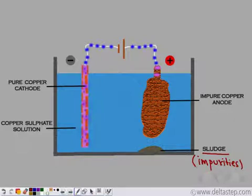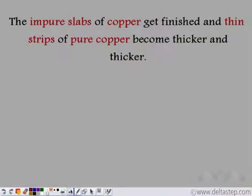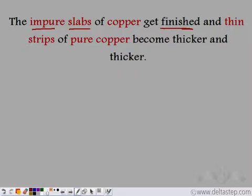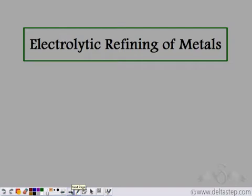So electrolysis can be used for the electrolytic refining of metals. The impure slabs of copper used as the anode get finished as electrolysis proceeds, because all the impure copper continuously enters the solution. The pure copper rod at the cathode becomes thicker and thicker due to the deposition of copper ions. By using electrolysis, we can purify or refine metals — this is one very important application of electrolysis in the present day.